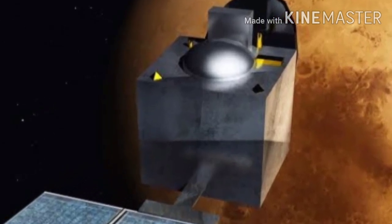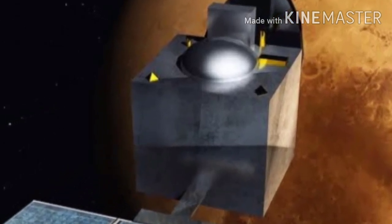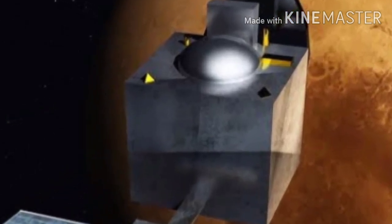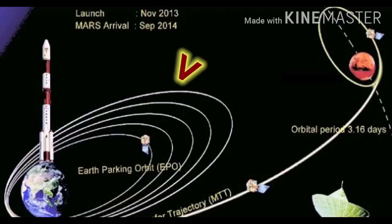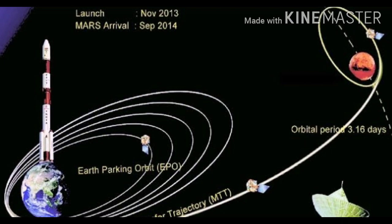The speed was too slow to take it out of Earth's orbit, so they had to find a way to generate speed. What they did was make the satellite orbit around Earth six times until it picked up enough speed. Then they fired the engine and pushed it out of Earth's orbit. This was the first obstacle.